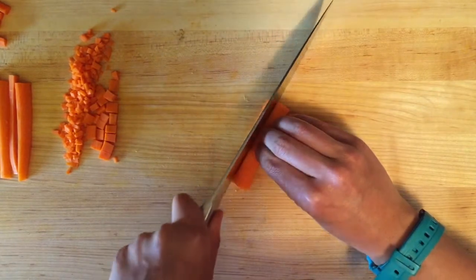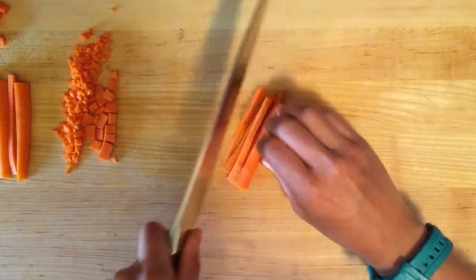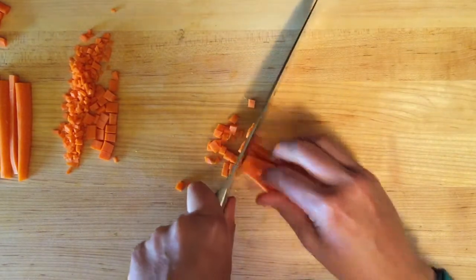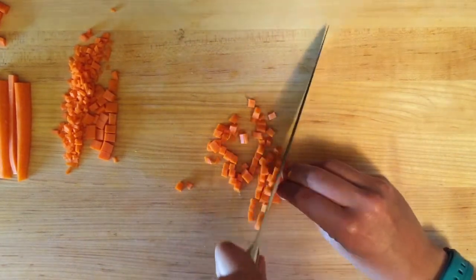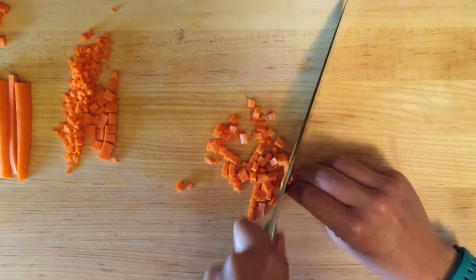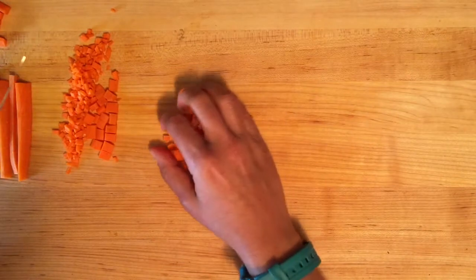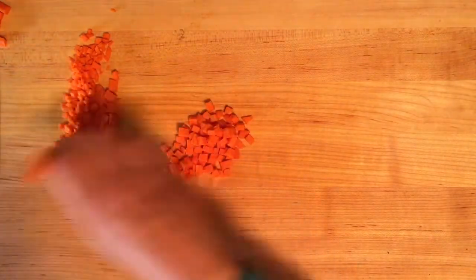And again, you can always vary the width of the slices. So you can get different types of dice depending on what you're doing. The dice can be used for salads, but most of the time it's used for sautéing with onion and celery for mirepoix or sofrito.